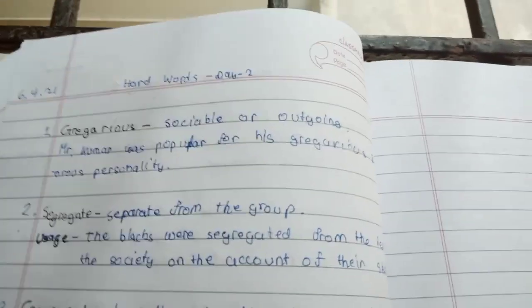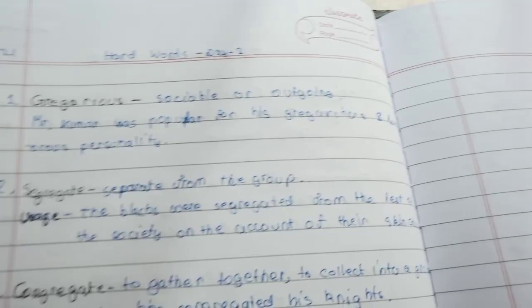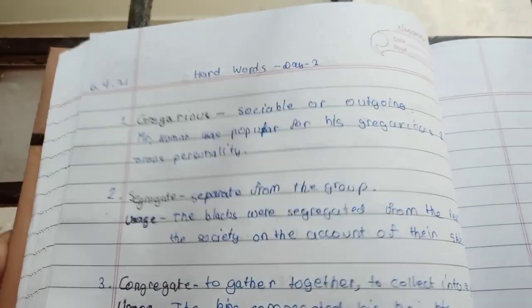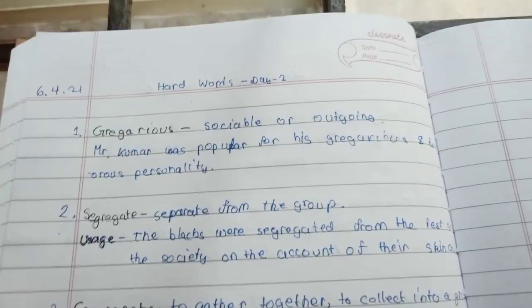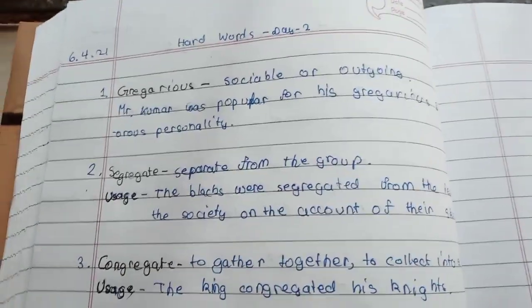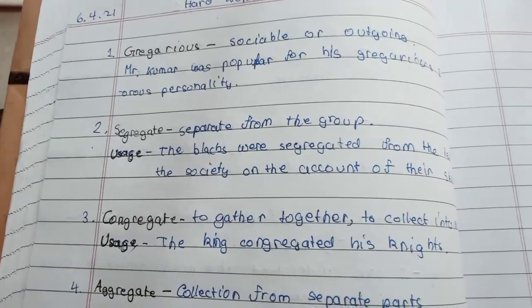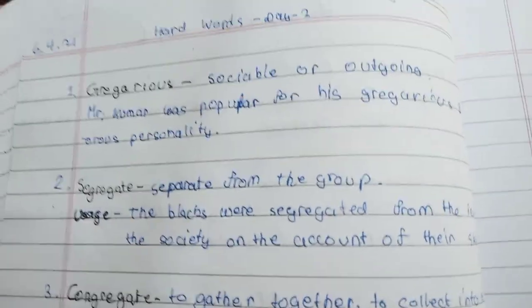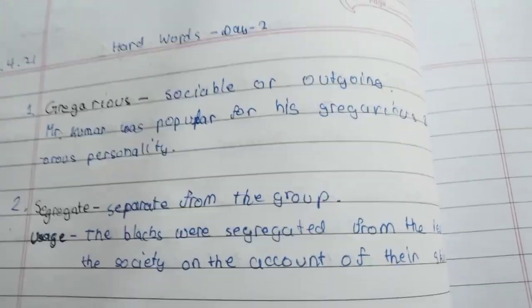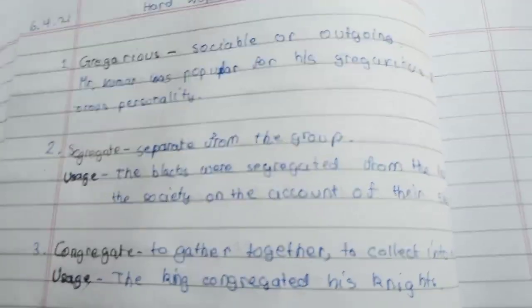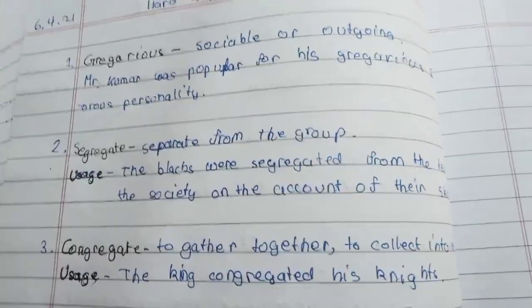...gregarious, which means sociable or outgoing. This is similar to the characteristics of a human — humans are social animals and need to be gregarious. A sentence I've made spontaneously: 'Mr. Kumar was popular for his gregarious and humorous personality.'